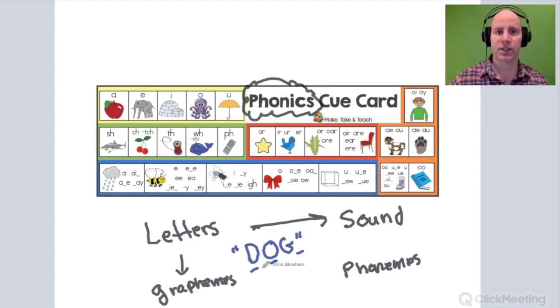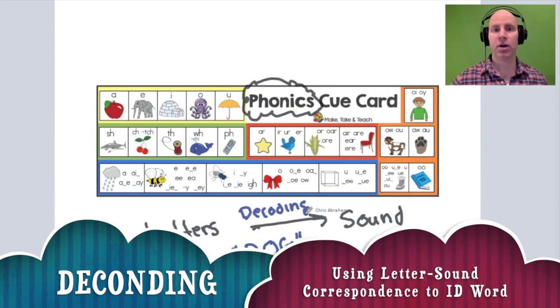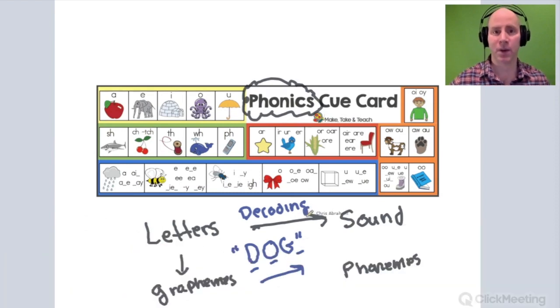We call this process when a child takes letters and matches them up with their corresponding sounds to pronounce the word correctly, dog. Decoding. Decoding has to do with letter-sound correspondence.